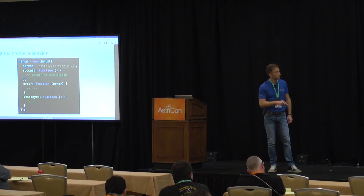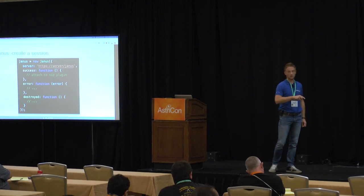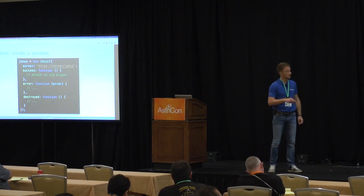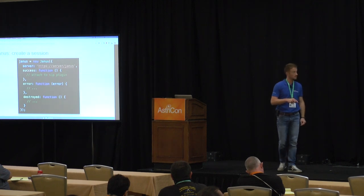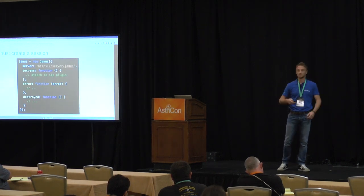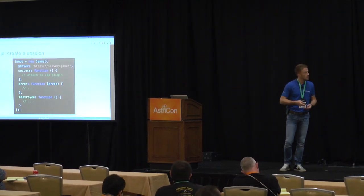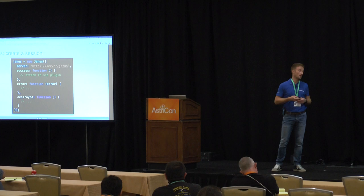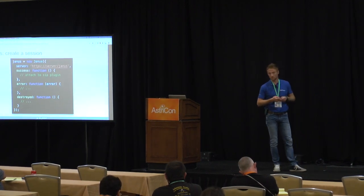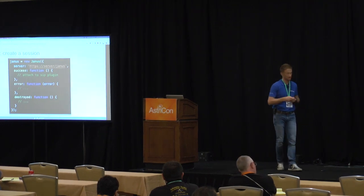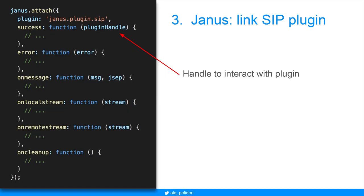Note that the server URL is a little bit different from that of SIPML5 because now no customized port is present — all the traffic is HTTPS and is proxy-passed by the web server. This is very useful because you don't have to open another port on the server. In case of a self-signed certificate, you have to accept it on the browser only the first time. Then we specify other callbacks and attach the SIP plugin, specifying many callbacks for different operations.